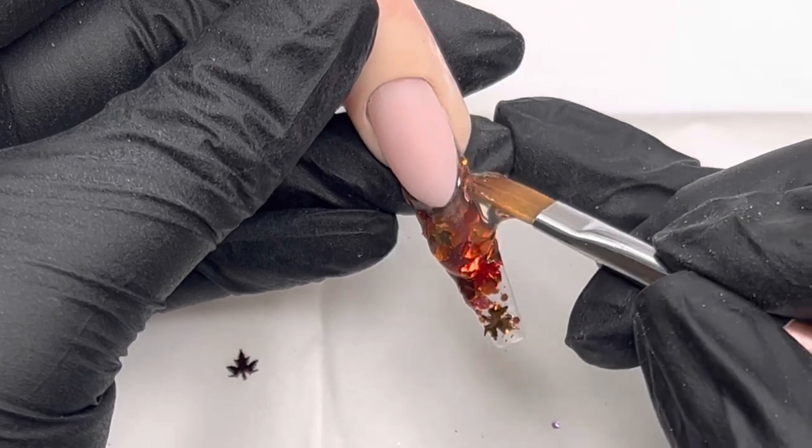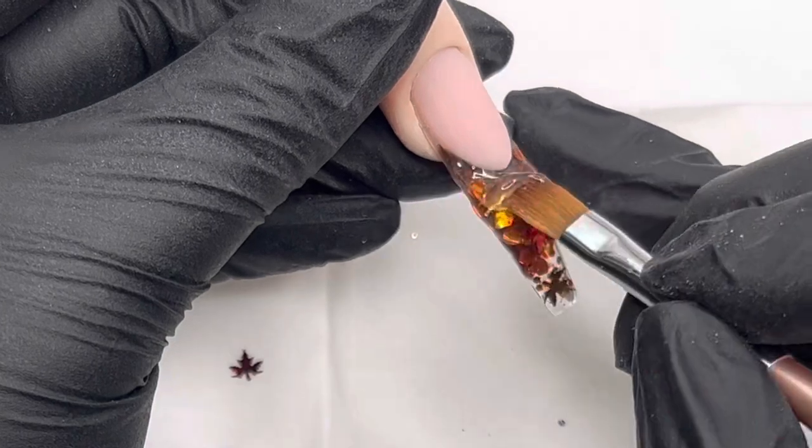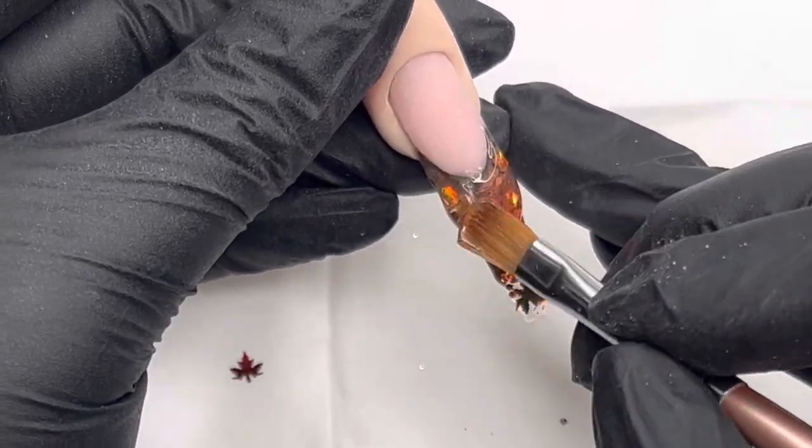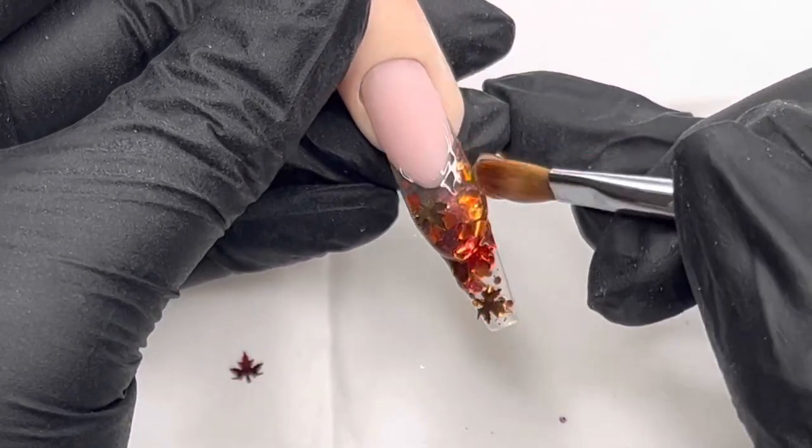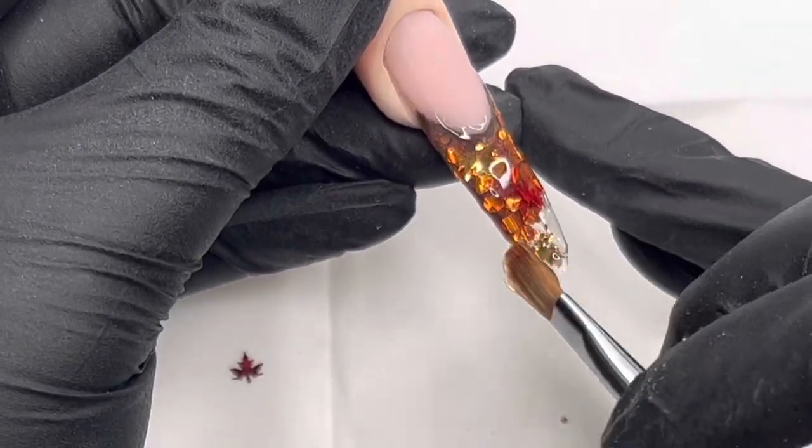And then once that's cured, then I'm going to go in with some more builder gel. This is the clear builder gel and I'm just sort of butting that right up to the smile line. And then I'm just going to walk the gel down. I am taking my time—this is sped up.